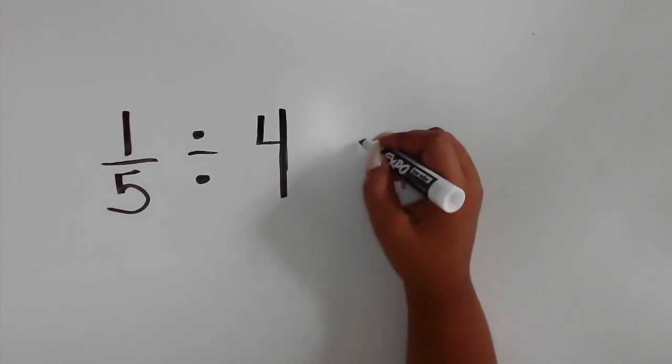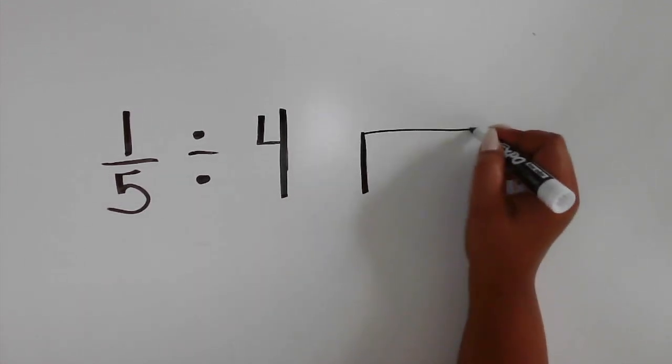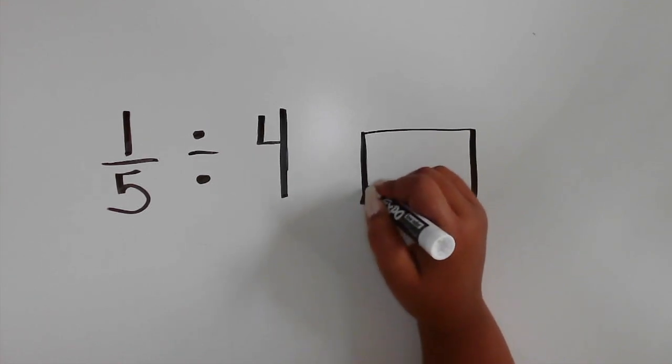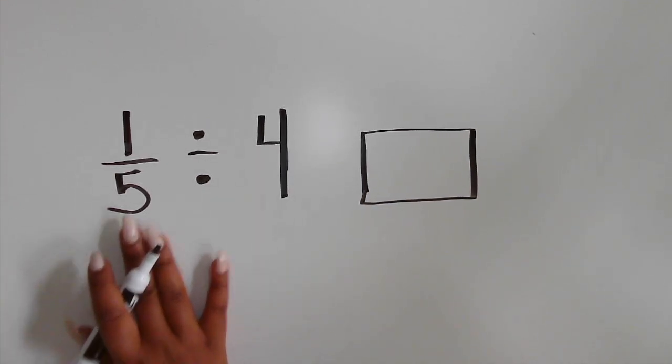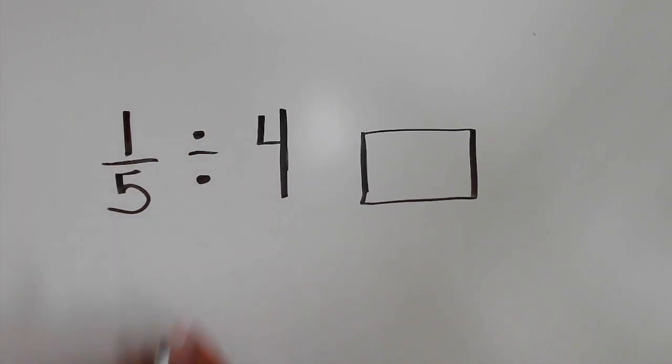1 fifth divided by 4. Start by drawing a rectangle. The rectangle represents one whole and we will show what 1 fifth of the whole looks like.